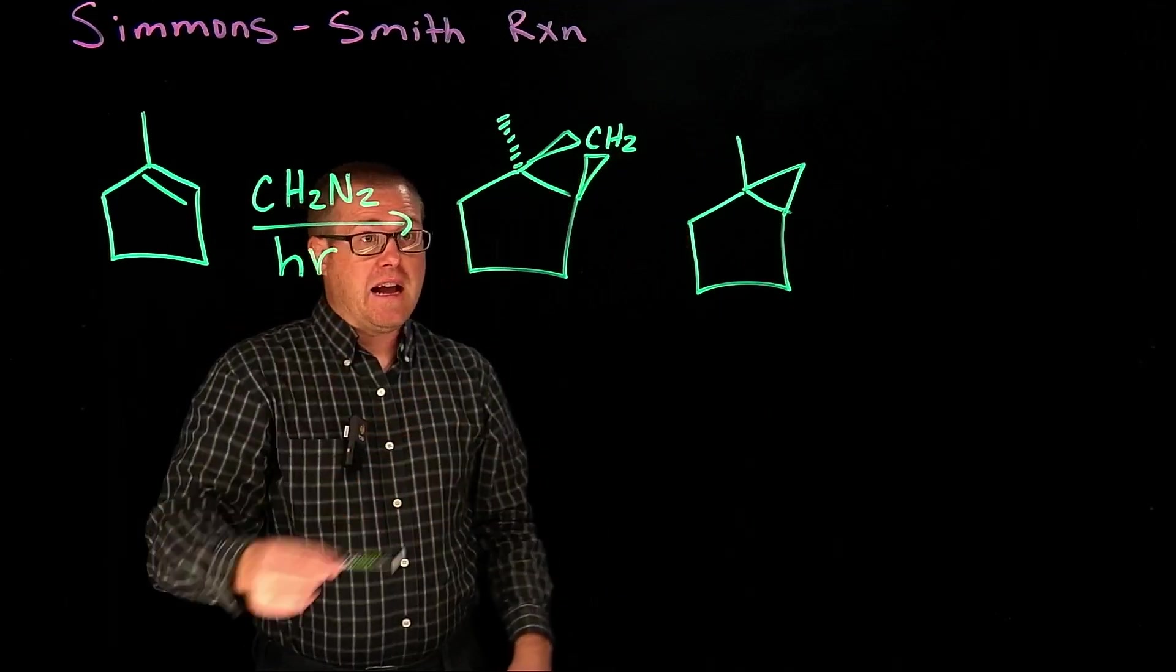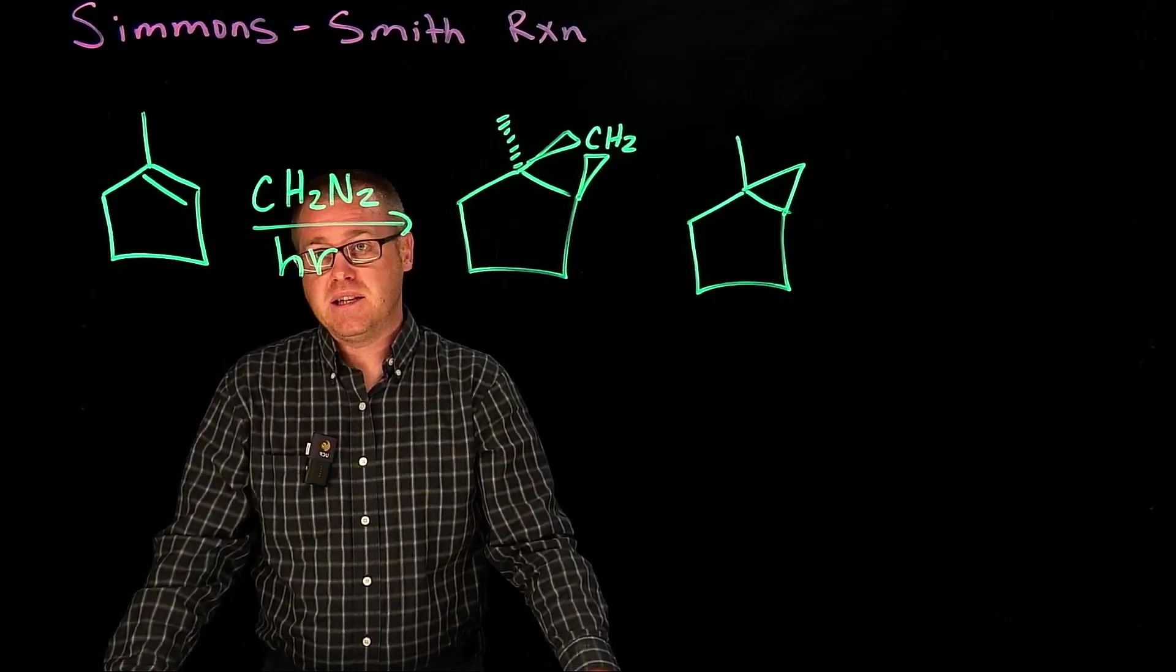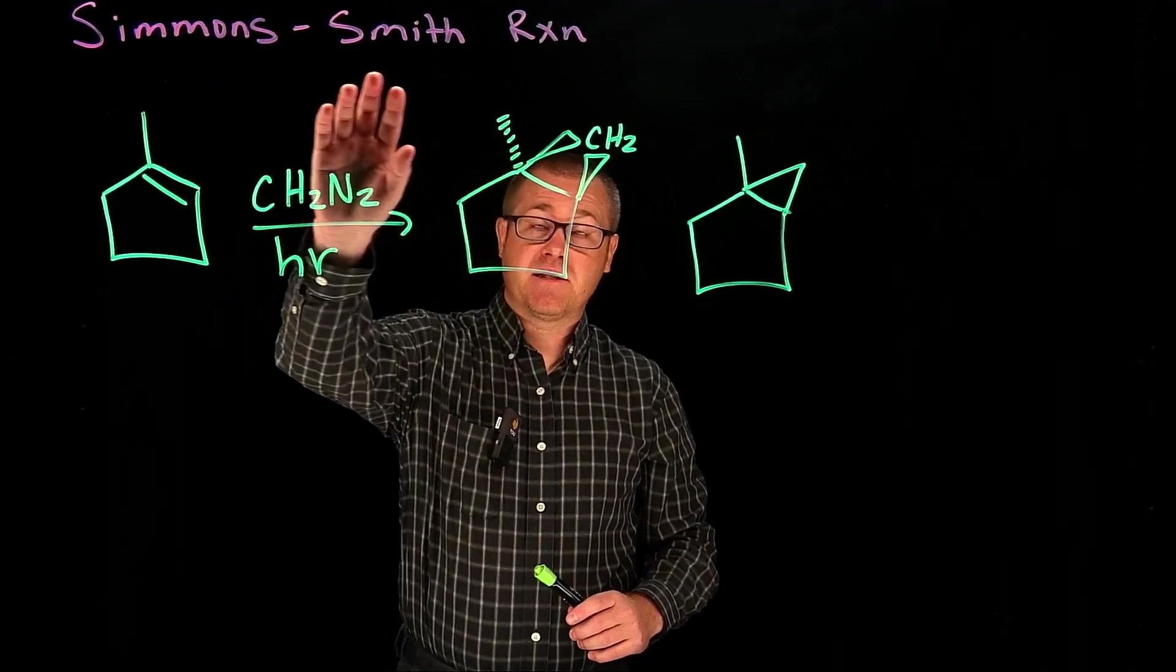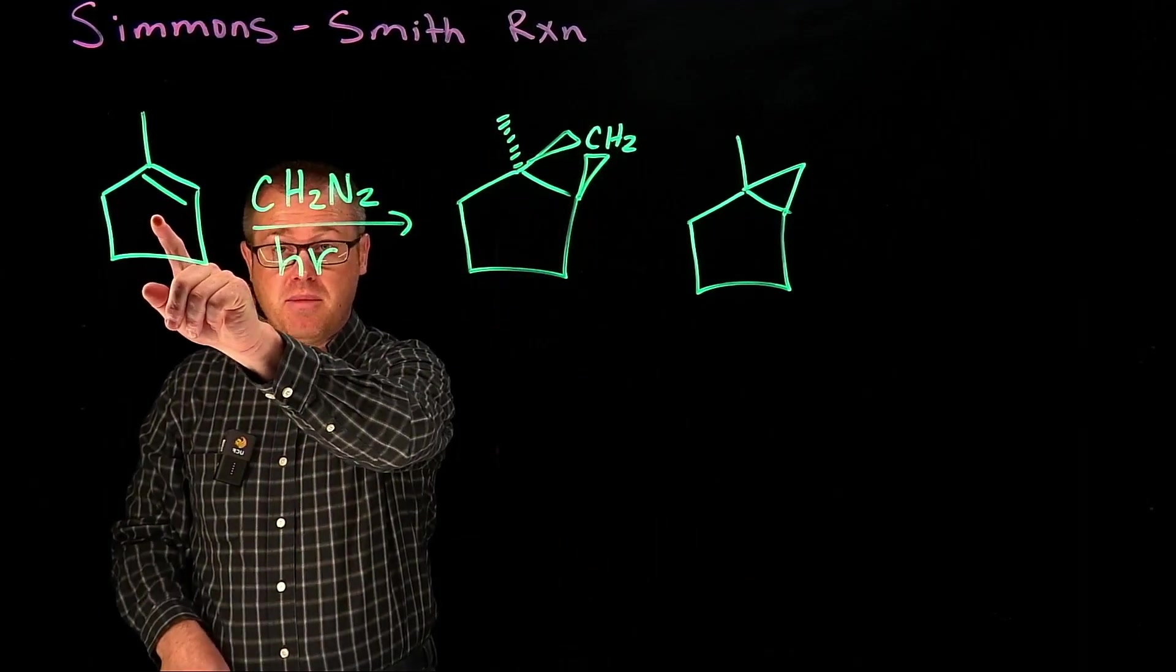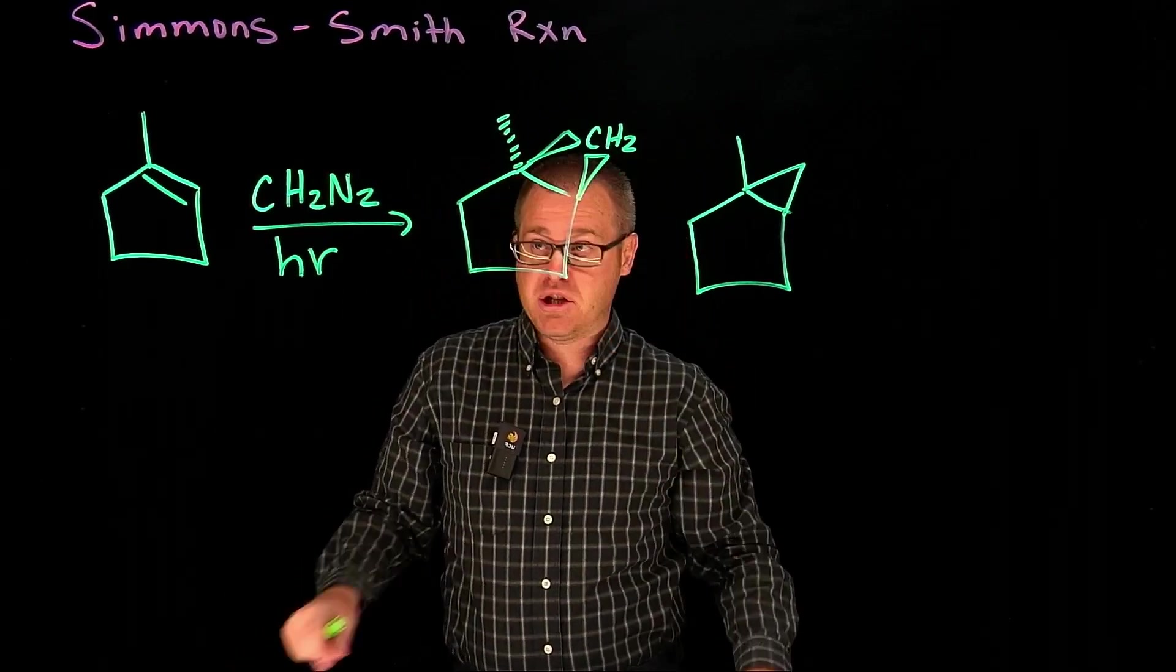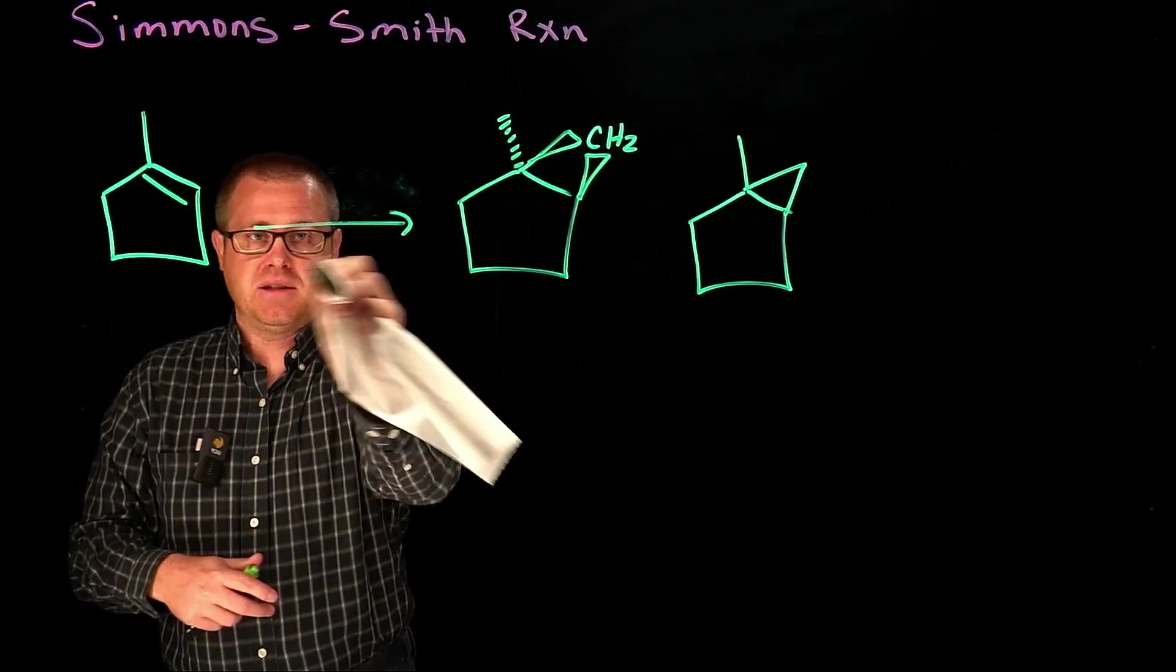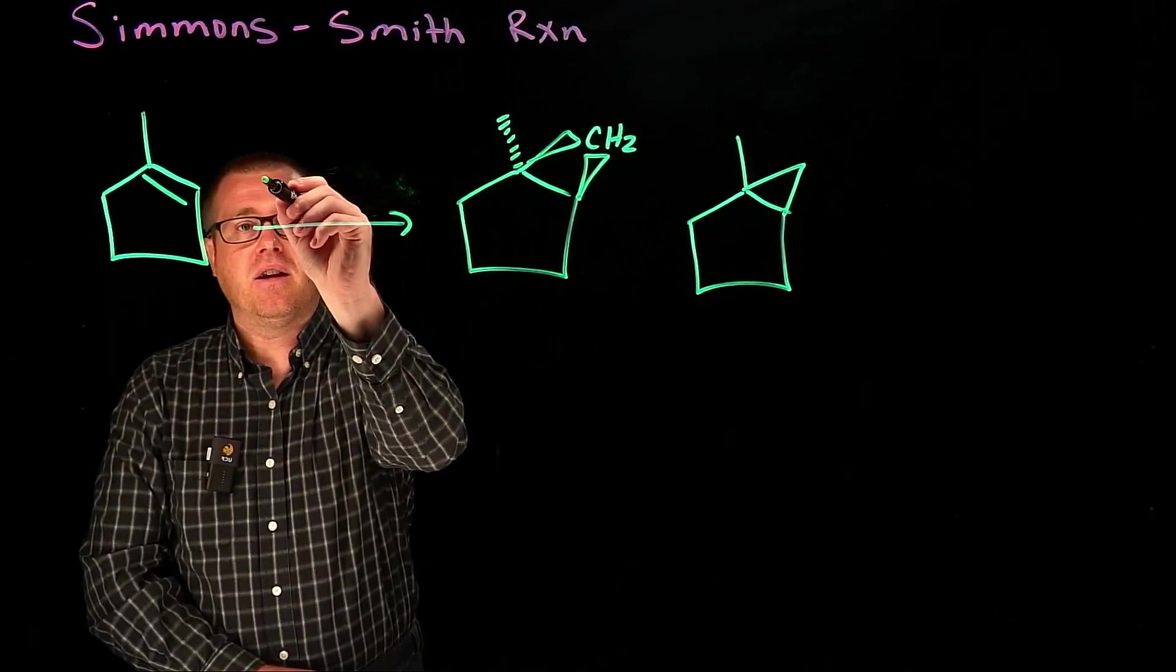Now, doing this reaction gets you this product in very good yield, but the reaction is very dangerous because it's explosive. And so that's why we have the Simmons-Smith reaction because we're going to take this same compound starting material and we're going to get to the same product. It's just the reagents are going to be different, and those different reagents make it not dangerous.